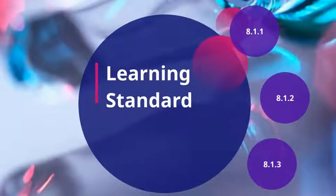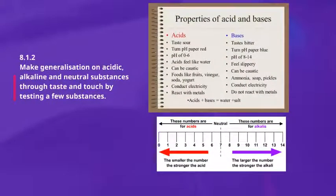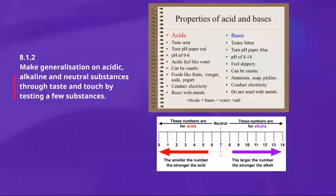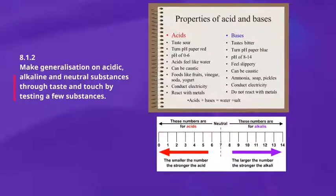Let's look at learning standard 8.1.2: make generalizations on acidic, alkaline and neutral substances through taste and touch by testing a few substances. Acidic and alkaline have different properties. Acidic substances have a sour taste, turn litmus paper red, have a pH value of 0 to 6, feel like water, can be caustic. Examples include fruits, vinegar, soda and yogurt. Acidic substances conduct electricity and react with metals.